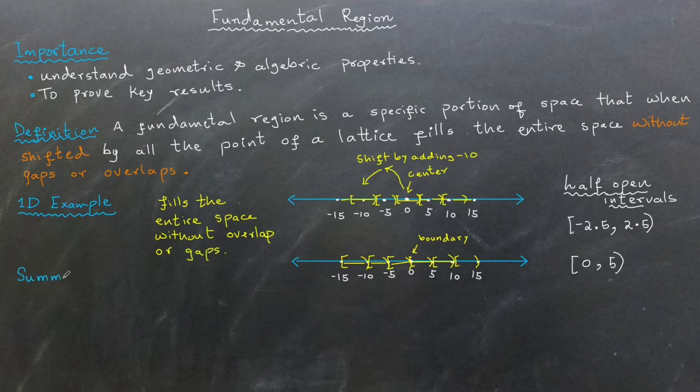To summarize, the key properties of a fundamental region are: 1. It covers the entire lattice space. 2. It does not overlap with neighboring regions. 3. Each lattice point is uniquely contained within one fundamental region.